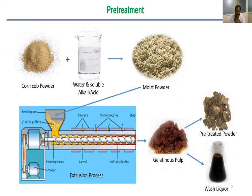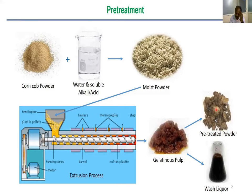As explained in earlier talks, this color change happens because lignin gets liberated. When we wash with water, we get the washed liquor, and the remaining material is a pre-treated powder containing large amounts of cellulose — up to 90% cellulose — since hemicellulose and lignin are gone. The starting material typically contains about 35% cellulose, 30% hemicellulose, 20–35% lignin, and ash.